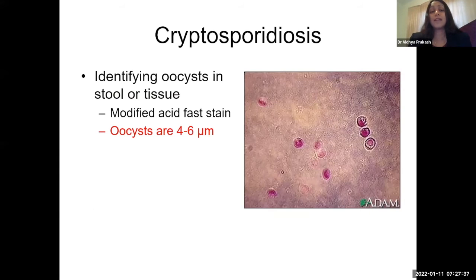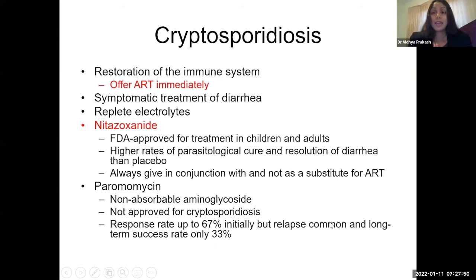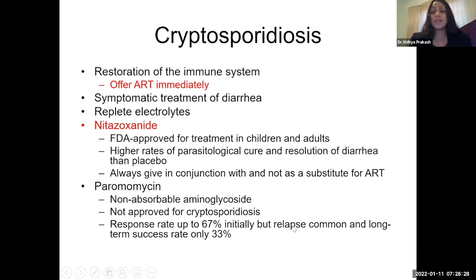Diagnosis involves identifying oocysts in stool tissue using a modified acid-fast stain; oocysts are generally four to six micrometers. ART, ART, ART — there's no magic drug that works better than starting antiretroviral therapy to treat cryptosporidiosis. Once you give them their immune system back, the diarrhea will eventually resolve. You can symptomatically treat the diarrhea and replete electrolytes. Nitazoxanide is FDA approved; paromomycin has a response rate up to 67%, but relapse is common and long-term success rate is only 33%. These should always be given in conjunction with — not as a substitute for — ART.